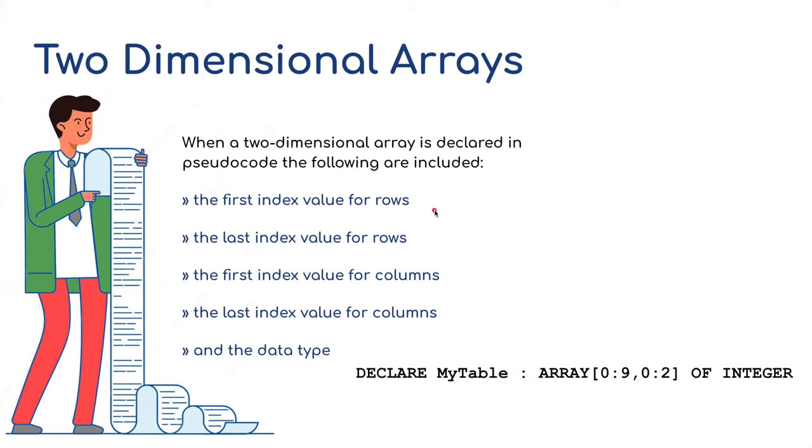Very similar to a one-dimensional array, when a two-dimensional array is declared in pseudocode, the following are included. The first index value of the row, 0. The last index value of the row, 9, and then the first index value of the column, 0, and the last index value of the column, 2. So it's going to be 0, 1, 2, so it's going to be three columns, and it's going to be 0 to 9, 10 rows. And then, of course, there's a data type, as before, but this time it's an integer.